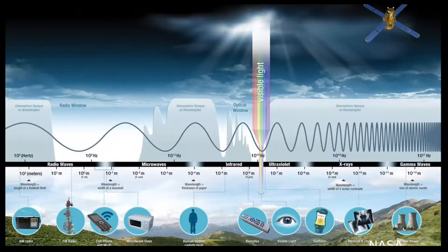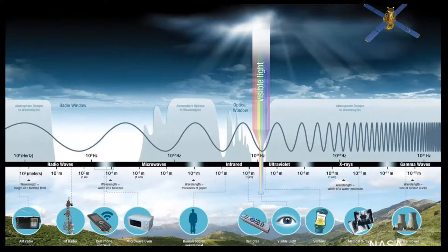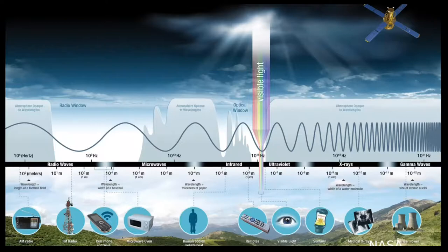This NASA depiction of the electromagnetic spectrum shows AM radio at the far left in the 10² range, progressing through radio waves, FM radio, cell phones, microwave, infrared, and visible light, and then into higher-energy ionizing radiation: ultraviolet light, X-rays, and finally gamma waves. It also nicely depicts both frequency and wavelength.